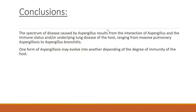In conclusion, the spectrum of disease results from the interaction of aspergillus with the immune status and the underlying disease of the host, ranging from invasive pulmonary aspergillosis to aspergillus bronchitis. One form may evolve into another depending on the immune status of the patient. Thank you very much for listening. Do you all have any questions?